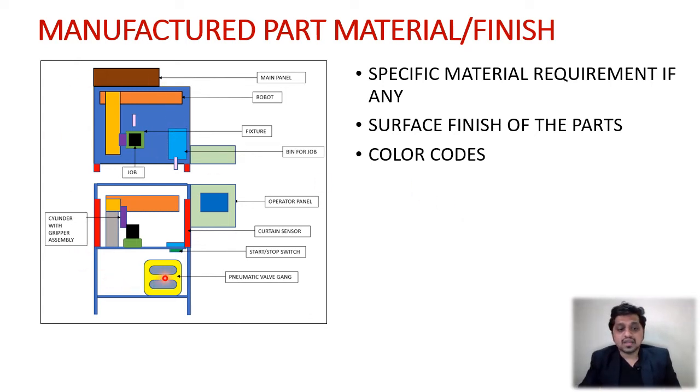Let's see the next thing: the manufactured part material and finish. In the whole machine we will be manufacturing a lot of things—the bracket for mounting the valve gang, our fixture, many of the brackets, the bracket for mounting the robot. All these things are manufactured. If there is a specific material requirement for those things, the customer can say the fixture should be made up from stainless steel because it is corrosion resistant.